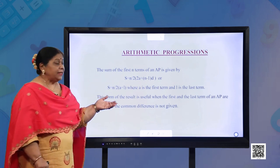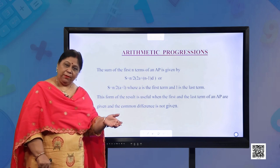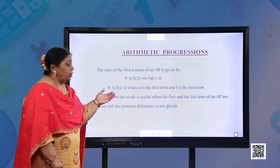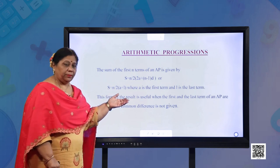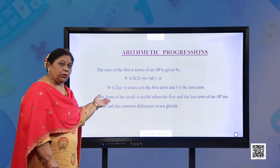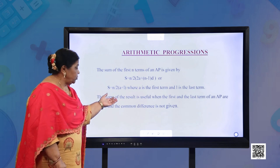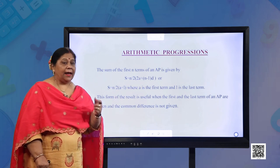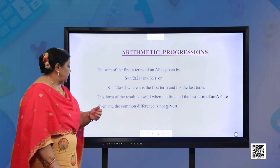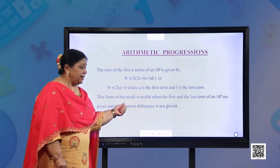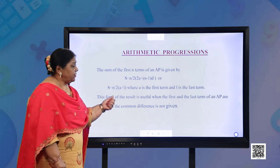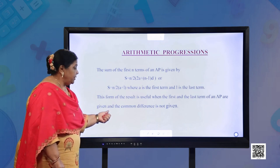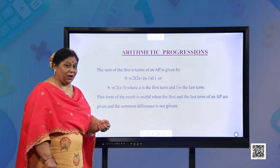The sum of first n terms of an AP is given by S = n/2 × (2A + (n−1)D), or S = n/2 × (A + L), where A is the first term and L is the last term. This form of the result is useful when the first term and the last term of the AP are given and the common difference is not given.